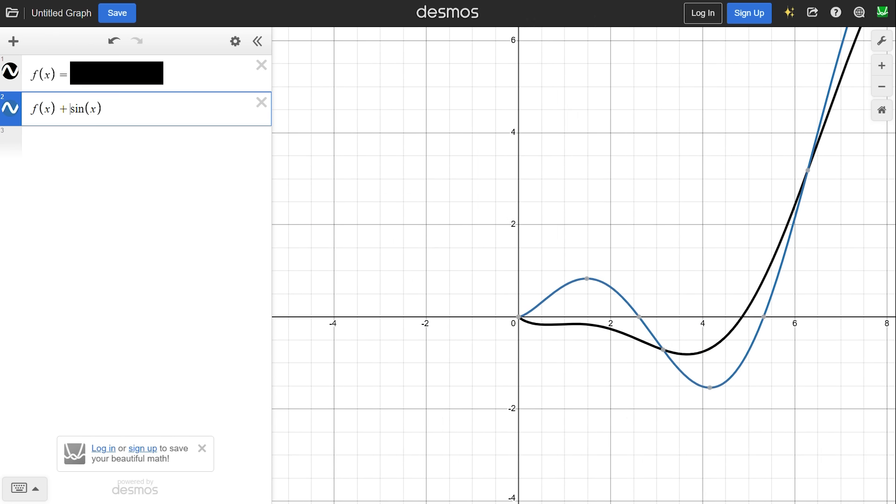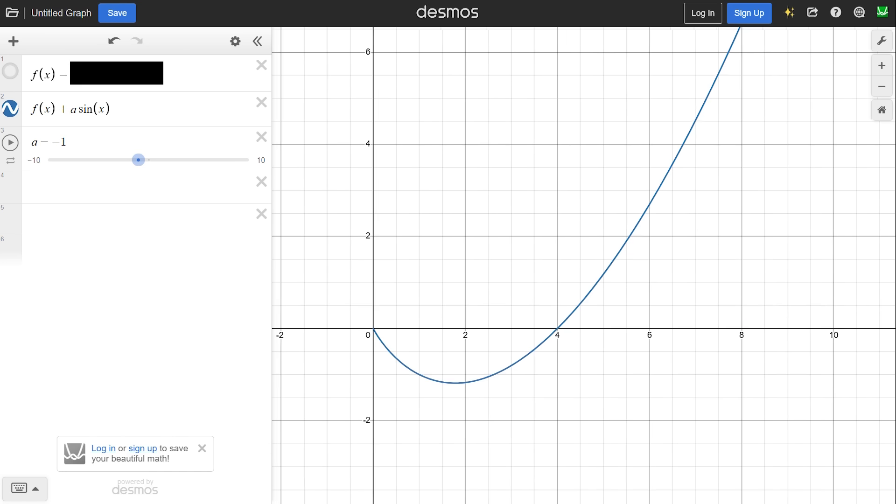But should we add sine instead? Should we subtract 2 sine instead of just sine? To answer this, let's make a slider and adjust that until something looks right. It looks like subtracting sine was the smart thing to do, since we now have a nice root at x equals 4 and our function also looks a lot smoother. So let's hide the initial function and work on this one instead.